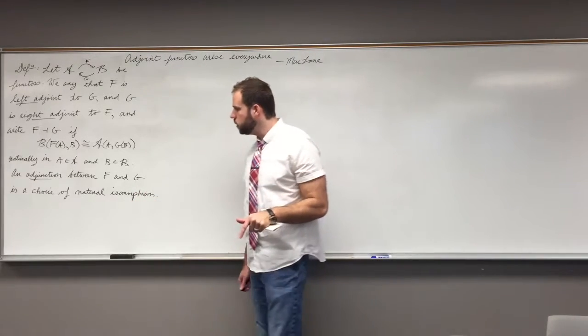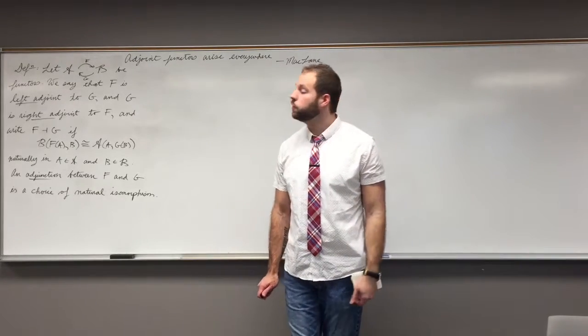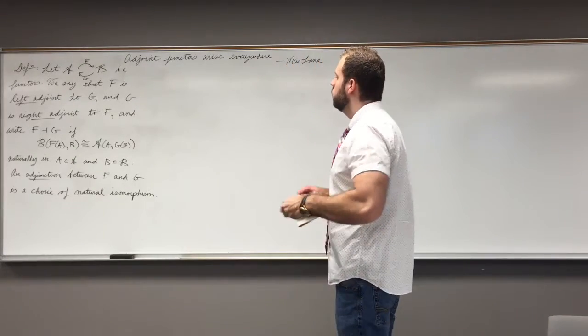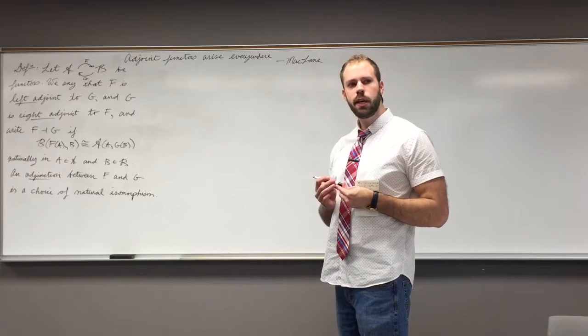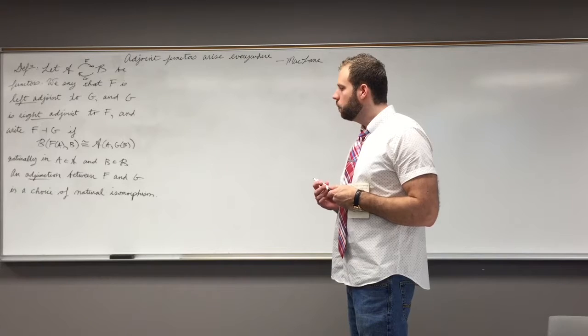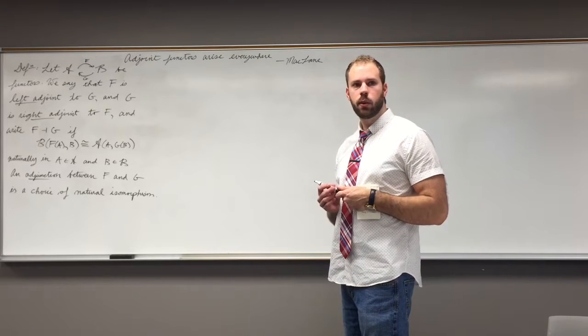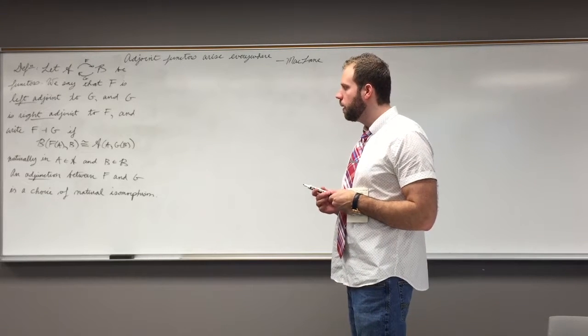An adjunction between F and G is a choice of natural isomorphism. So another thing you might be thinking: well, natural isomorphism, that's just natural transformation too. But isn't that for functors that are going in the same direction? And you'd be right.